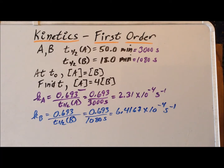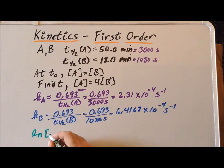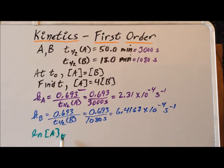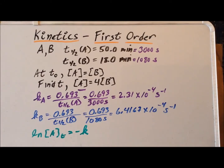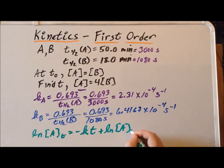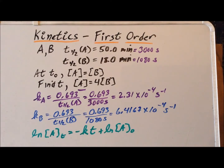For a first-order reaction, we can find the amount of material remaining after time t. The concentration of A at time t satisfies: ln[A]_t = −k·t + ln[A]₀, where [A]₀ is the concentration of A at the initial time t₀. This expression is generally true for any substance that undergoes a first-order reaction.